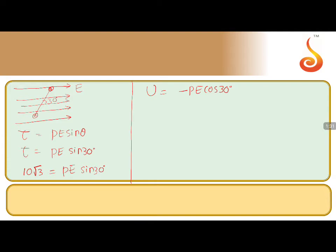So we don't know the PE value here. So this PE value we need to get from the torque. So 10 root 3 is equal to PE into 1 by 2. So PE value will become 20 into root 3. This we substitute here.